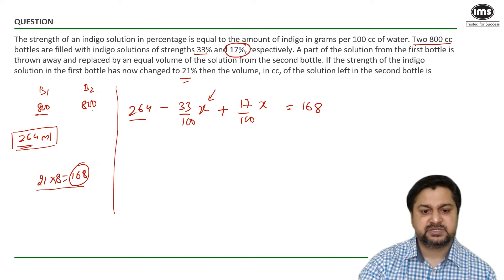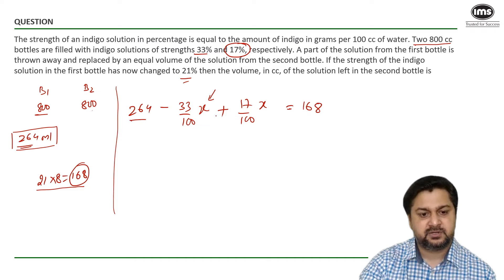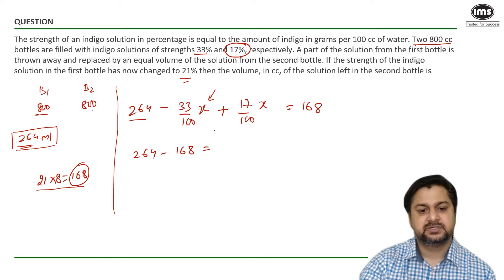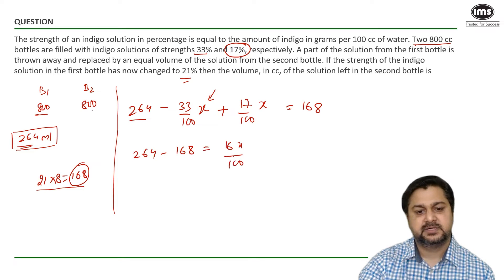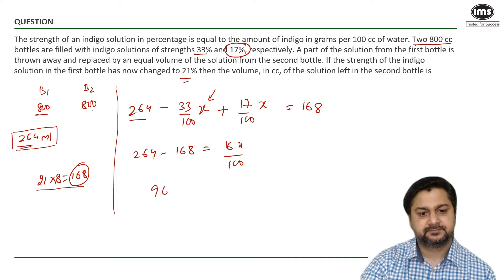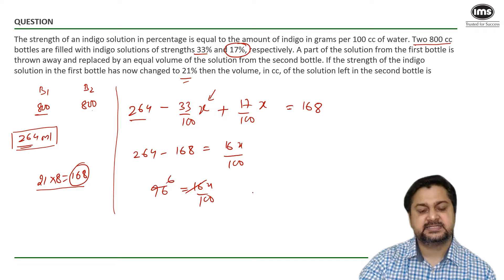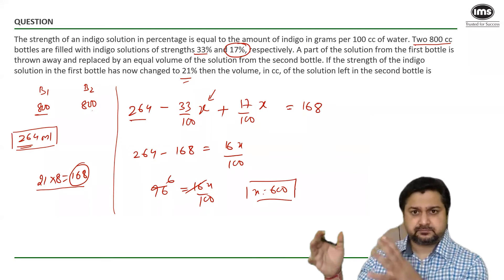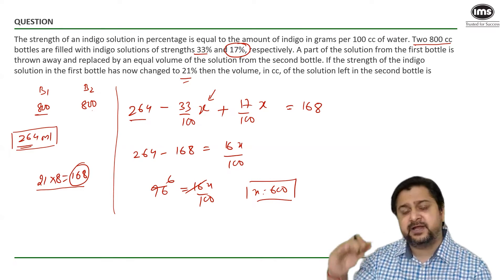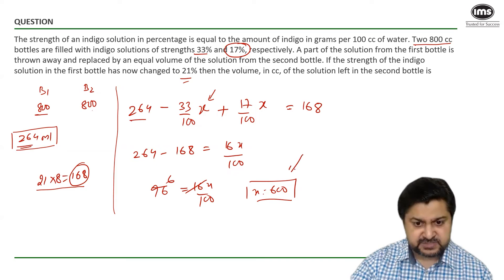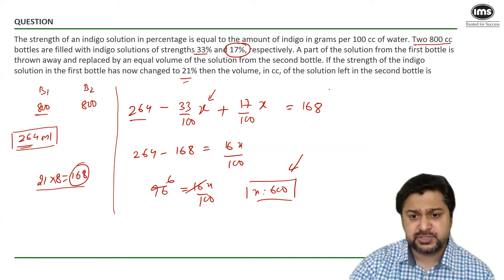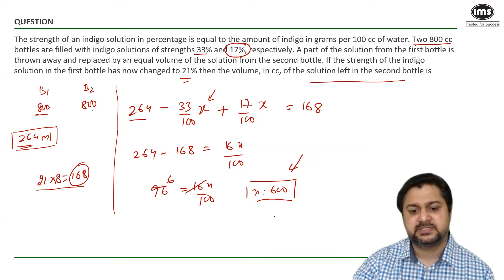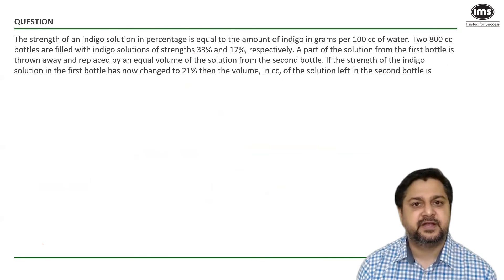So 264 minus 168 equals 96, which equals 16% of x. So 16x divided by 100 equals 96, giving x equals 600. That means 600 ml was poured from bottle 2 into bottle 1. Since bottle 2 had 800 ml originally, the solution left in the second bottle is 800 minus 600 equals 200 ml.